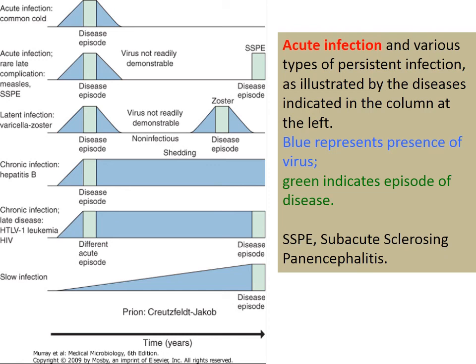Finally, slow infections — the classical example being prions. With slow infection, you build up viral load gradually over years until you acquire the infection — it rises steeply and then you get the disease episode. This is a topic that may have been covered in a student project presentation on prions.